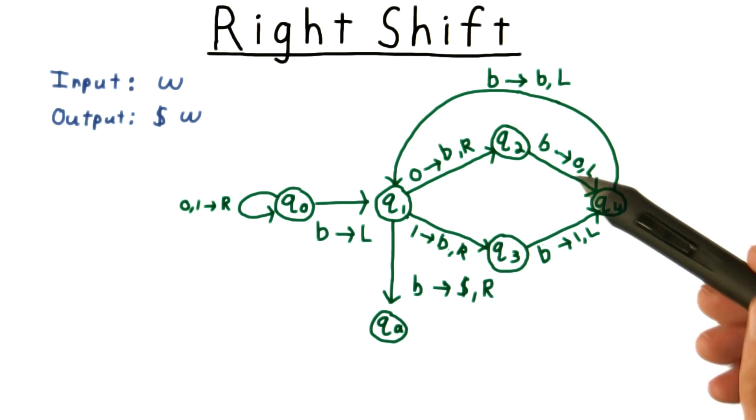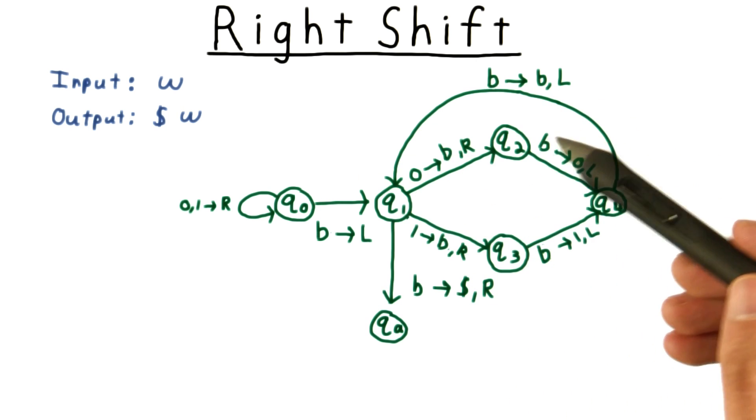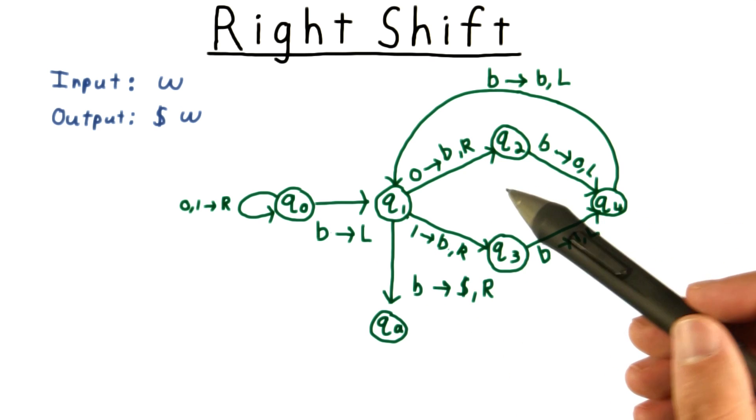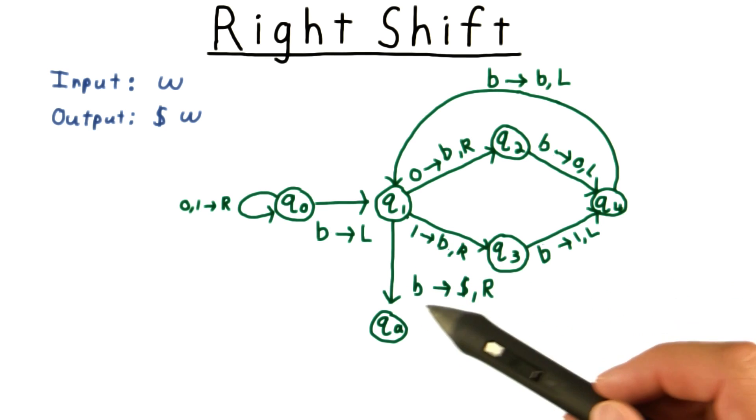Eventually, the whole string will have been shifted, and in this move, we'll try to move past the beginning of the tape. In this case, the head stays where it is, and so we read the blank symbol again.